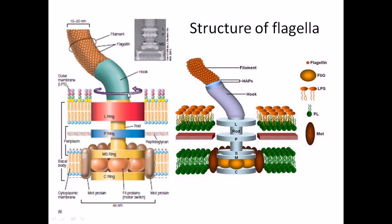The section completely embedded inside the cell membrane and cell wall is termed the basal body. Outside the cell membrane, there are only two important structures: the filament and the hook. The filament is what we actually see outside the membrane as the flagellum — the long, thin, thread-like structure coming out of the bacterial cell. The filament is attached to the ring structures via the hook.